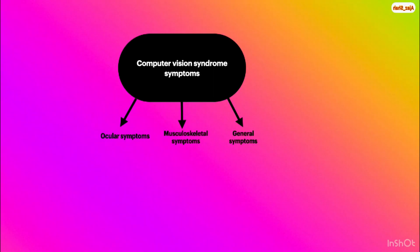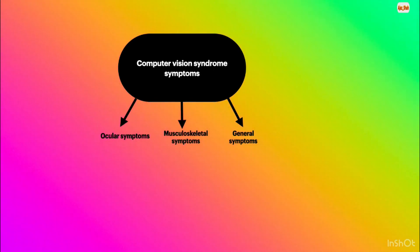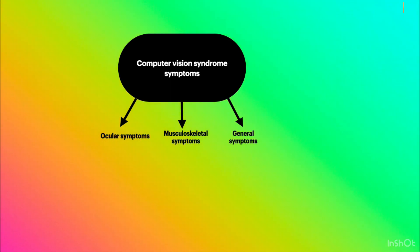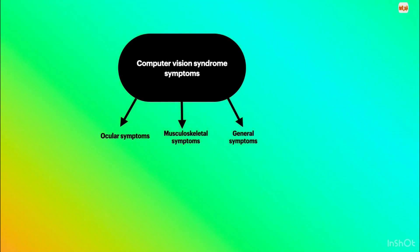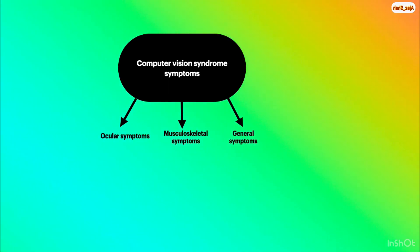Broadly, we can classify computer vision syndrome symptoms into three types: ocular symptoms, musculoskeletal symptoms, and general symptoms.